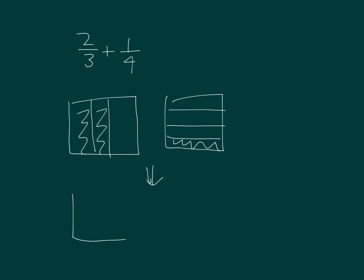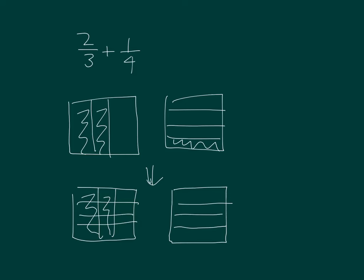Making equivalent fractions, let's see what we get. Those two thirds will equal eight twelfths, and I'll write that out in a second. One fourth equals three twelfths.